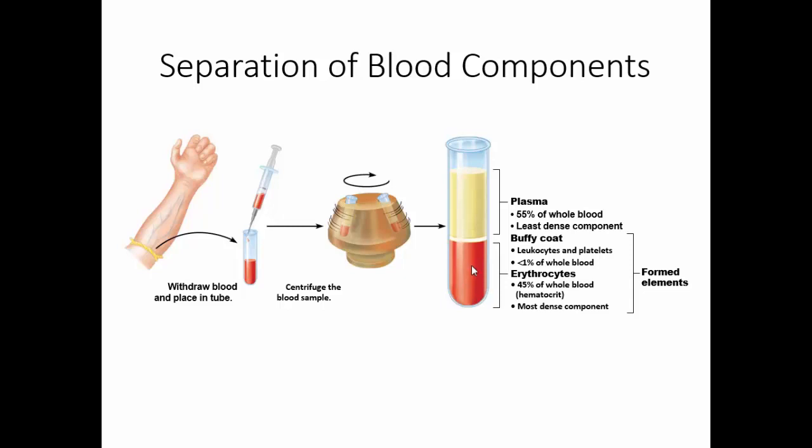In women, the hematocrit is about 42%, plus or minus 5%. In men, a hematocrit is about 47%, plus or minus 5%. You can divide the hematocrit by 3% and have a rough approximation of the hemoglobin content.